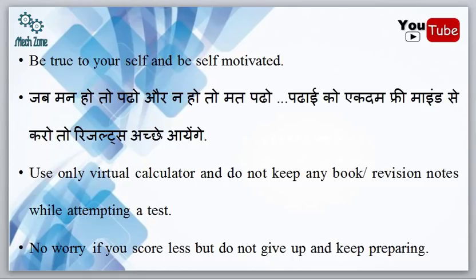Solving previous GATE year problems is very important because there is a high probability that previous year questions repeat. For example, questions like the Blasius equation — what is its order, degree, and type — are sometimes repeated. However, roughly 90% of the questions are new, and only about 10% can be found from previous years. Even getting 5% of questions from previous years is helpful, so practising them is worthwhile.